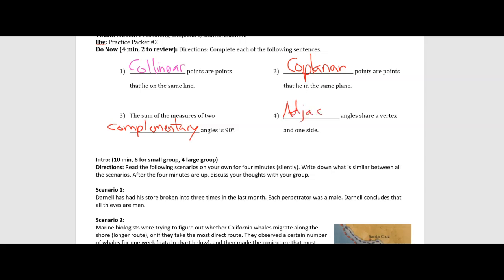These angles always share a vertex and one side. There are some other angles that sometimes share a vertex and one side, like sometimes complementary angles share a vertex and one side. Sometimes supplementary angles share a vertex and one side. But adjacent angles always share a vertex and one side. All right, let's get into the new concepts for this unit.